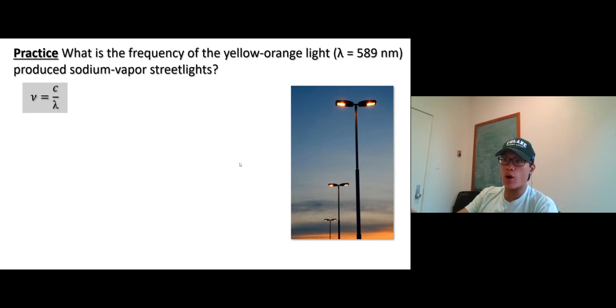What you have to be able to do is to use this equation and calculate either wavelength or frequency. Alright, I'll just do this one for you. But if you know how to do it, go for it. Don't wait for me. What is the frequency of the yellow-orange light? So that's light right there, with the wavelength of 589 nanometers produced by sodium vapor streetlights? Find frequency. Well, this is super simple there. So if you want to find frequency, which is right here, you need to know the value of the speed of light and the wavelength.